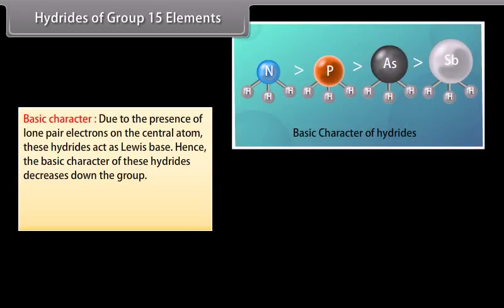Due to the presence of lone pair electrons on the central atom, these hydrides act as Lewis bases. Electron density around the central atom decreases down the group; hence, the basic character of these hydrides also decreases down the group.